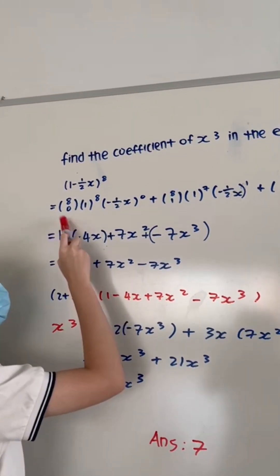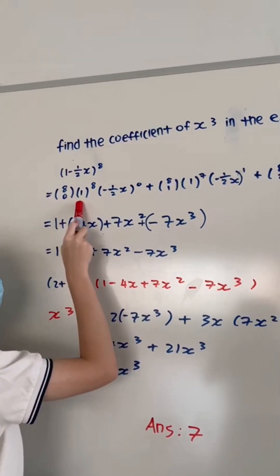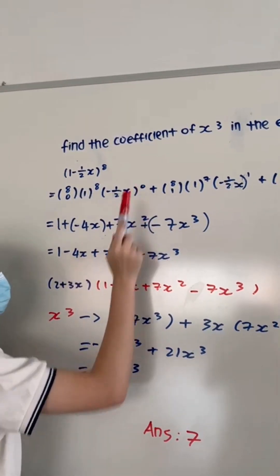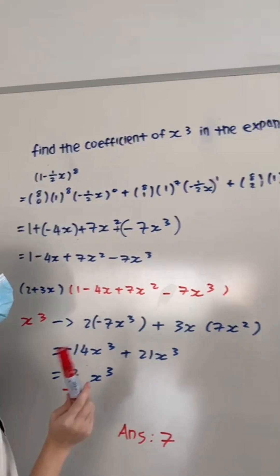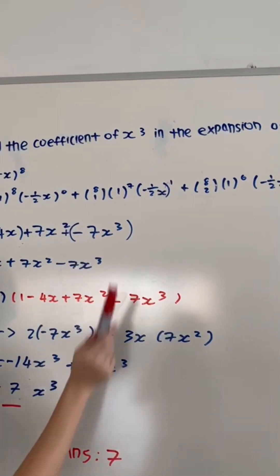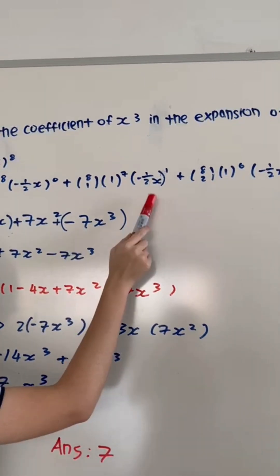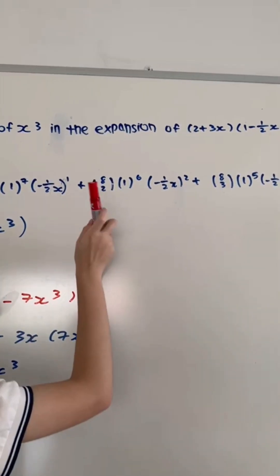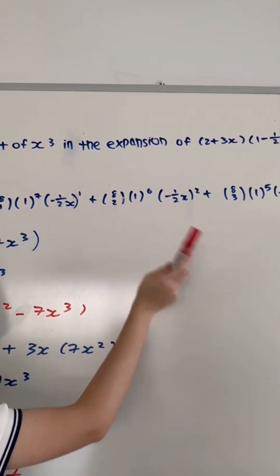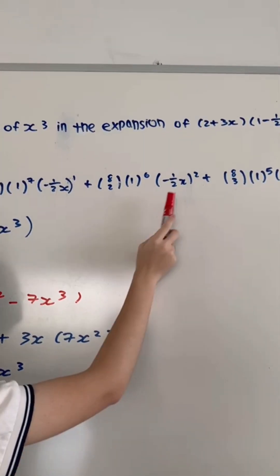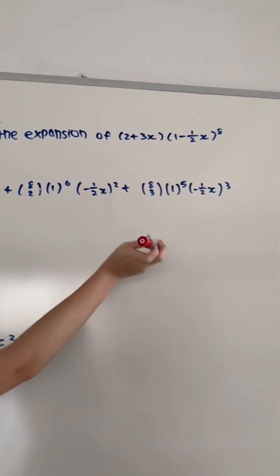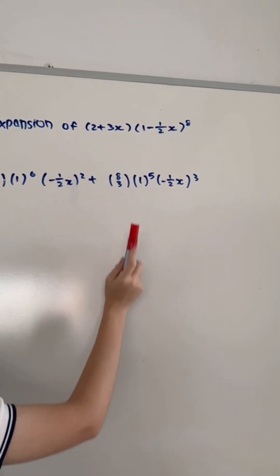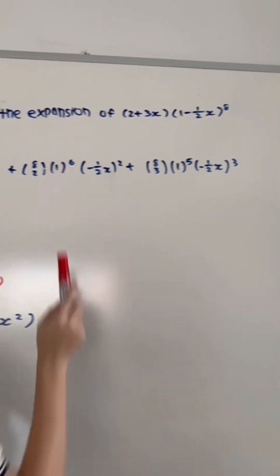The first term is 8C0 times 1^8 times (-½x)^0. The second term is 8C1 times 1^7 times (-½x)^1. The third term is 8C2 times 1^6 times (-½x)^2. The fourth term is 8C3 times 1^5 times (-½x)^3. This is the format for the expansion.